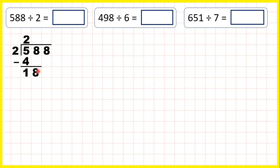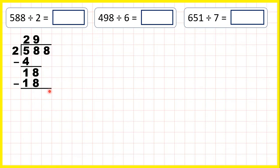Now 18 is in the 2 times table, so we can write 18 under the 18. And because 18 is 9 times 2, we can write 9 in our answer line. Now we subtract and bring down, but 18 minus 18 is just 0, so all we need to do is bring down the last digit — bring down the 8 — and we have 8 divided by 2.